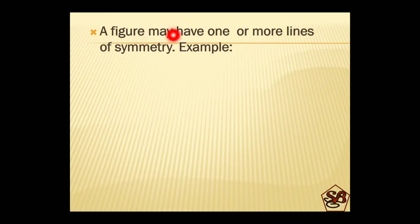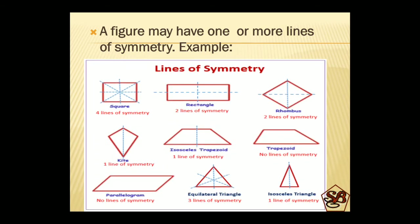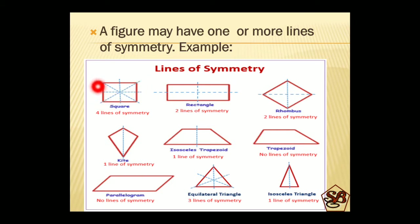A figure may have one or more lines of symmetry. Let us see with an example what is a line of symmetry and how a figure can have more lines of symmetry. Here is a square, and as you all know it has all four sides equal, so it can have four lines of symmetry: vertical, horizontal, diagonal, and another diagonal from left to right.